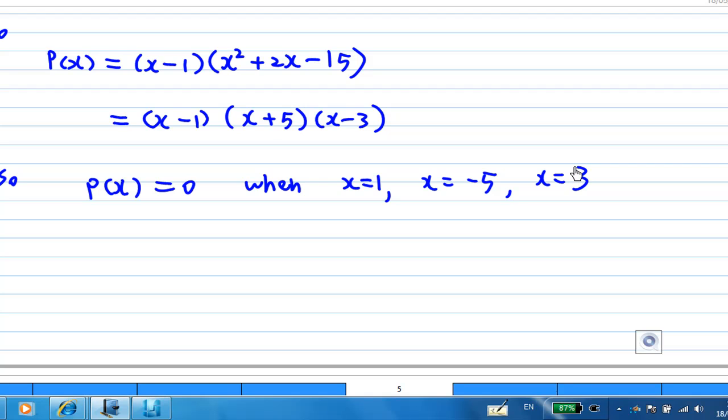So the real solutions of p(x) equals 0 are x equals 1, minus 5, and 3. That is the end of the solution.